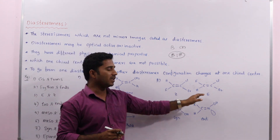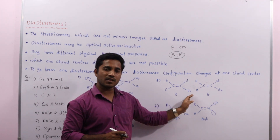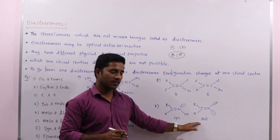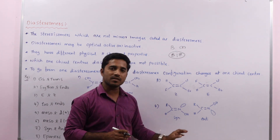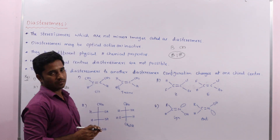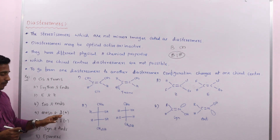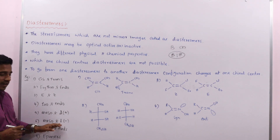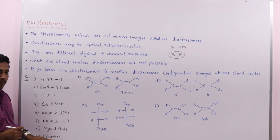Z and E isomers have the same molecular formula and are stereoisomers, but they are not mirror images. Similarly, syn and anti isomers have the same molecular formula but are not mirror images — so they are also diastereomers. Likewise, exo and endo are called diastereomers. A meso compound paired with a dextrorotatory compound, or a meso compound paired with a levorotatory compound, are also diastereomers. Epimers, which we already discussed, are also diastereomers.